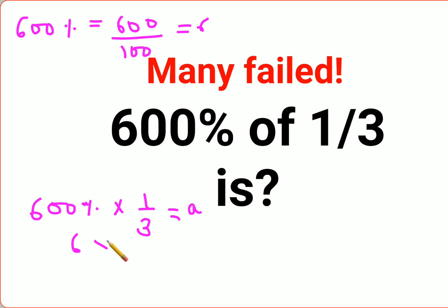So here what we get is 6 into 1 upon 3, and that equals A. So the value of A is 6 times 1 is 6, divided by 3 is 2. Therefore we can say A value is 2 for this particular question.